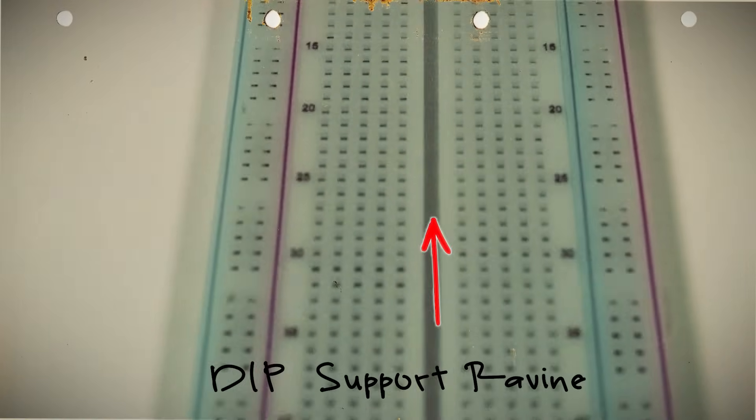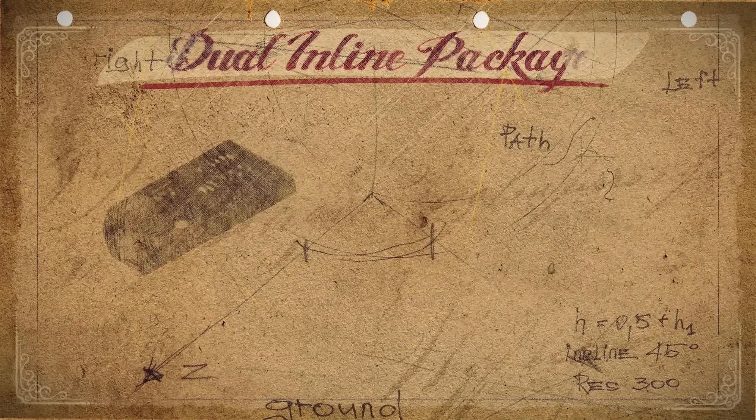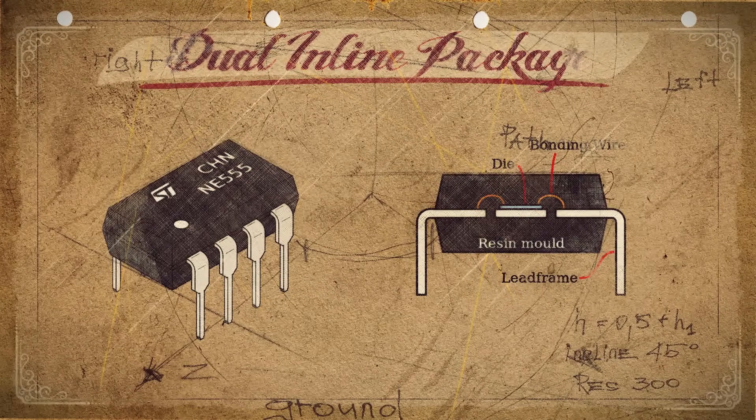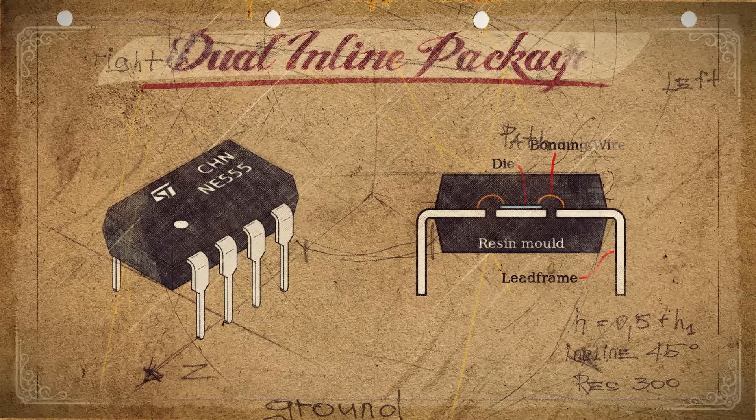This is known as a DIP support ravine. DIP stands for dual inline package, which is a description for a chip like this that has parallel pins on each side of it.